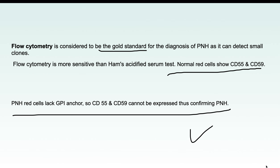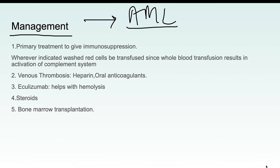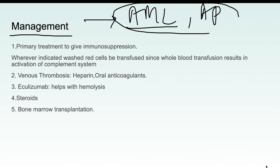PNH mostly affects young adults. Management varies according to how the patient is presenting — whether with hemolytic anemia, thrombosis, or marrow failure. Patients can also progress to AML or aplastic anemia. The primary treatment is immunosuppression to reduce complement system activation, which can be achieved with steroids.